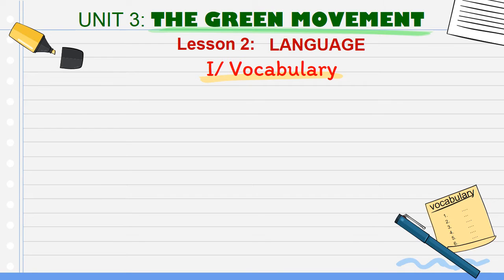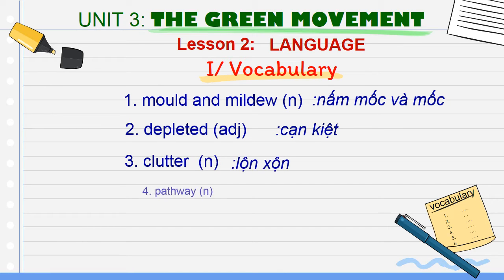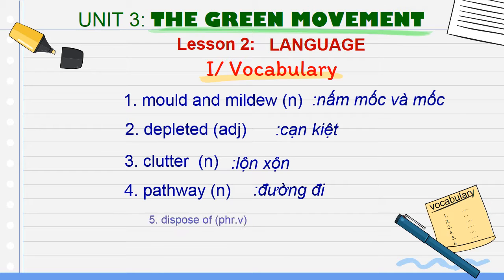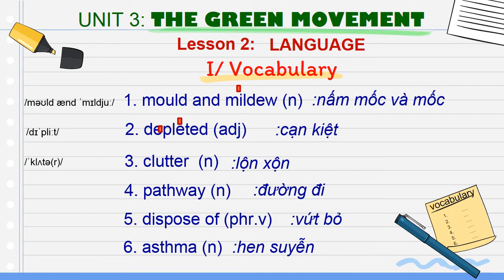Cô mời các em lắng nghe và lặp lại những từ mà chúng ta vừa mới học. Mold and mildew. Depleted. Clutter. Pathway. Disposed of. Asthma. Now can you put the stress? Mold and mildew. Depleted. Clutter. Pathway. Disposed of. Asthma.